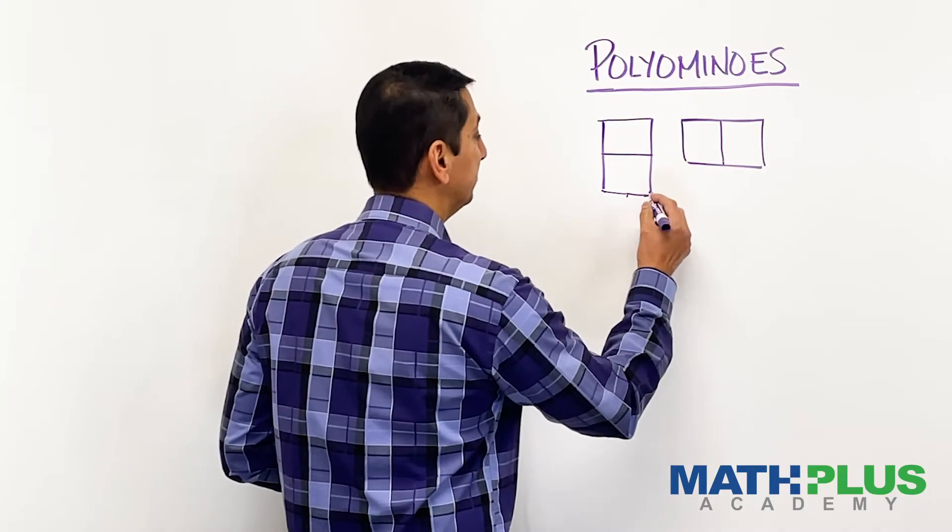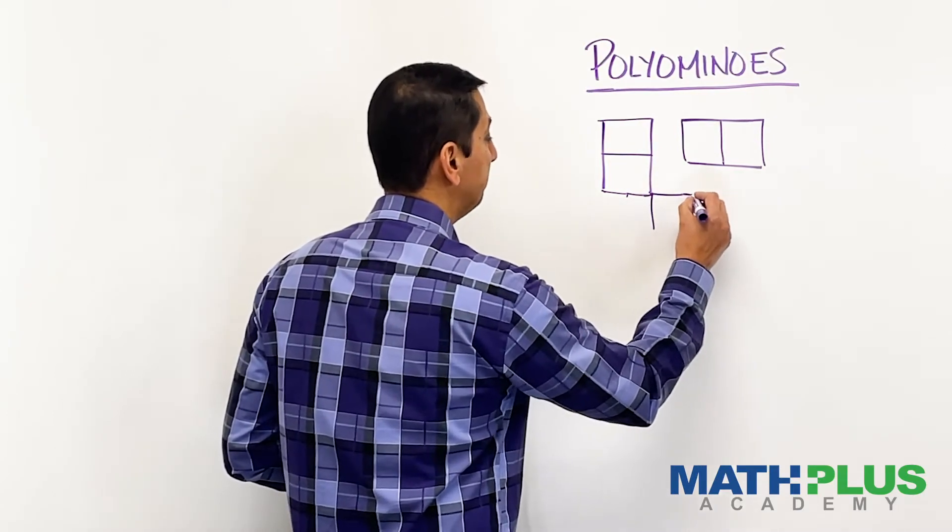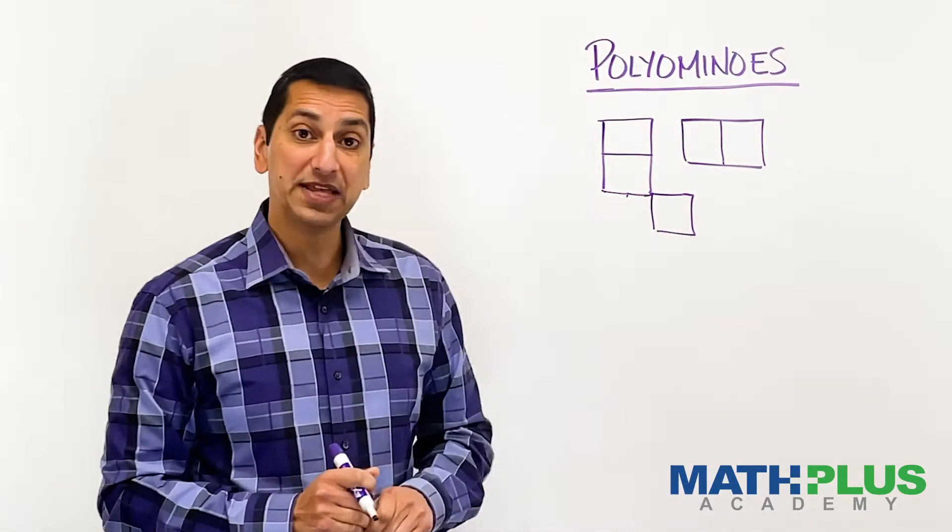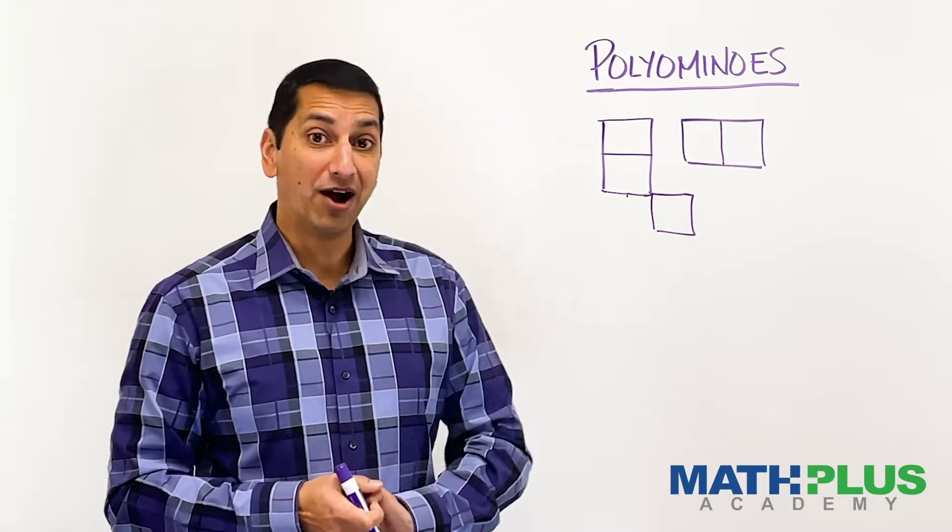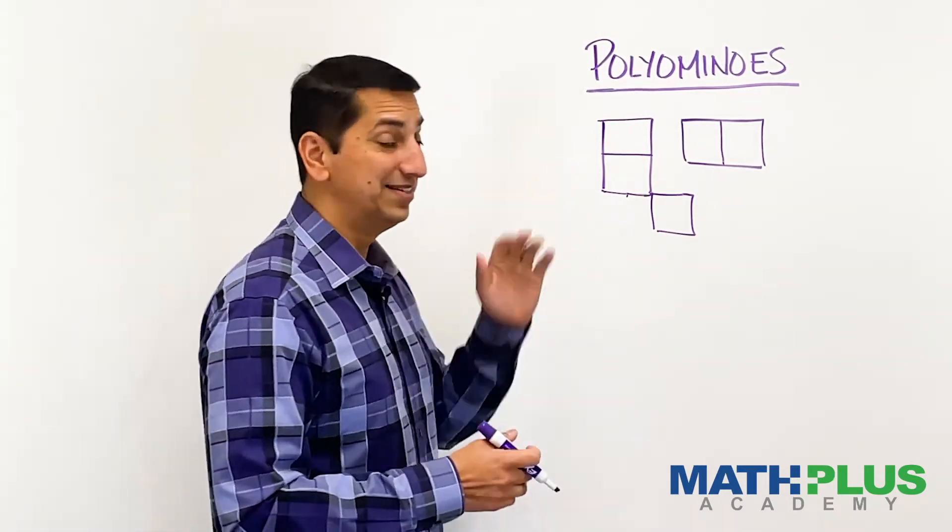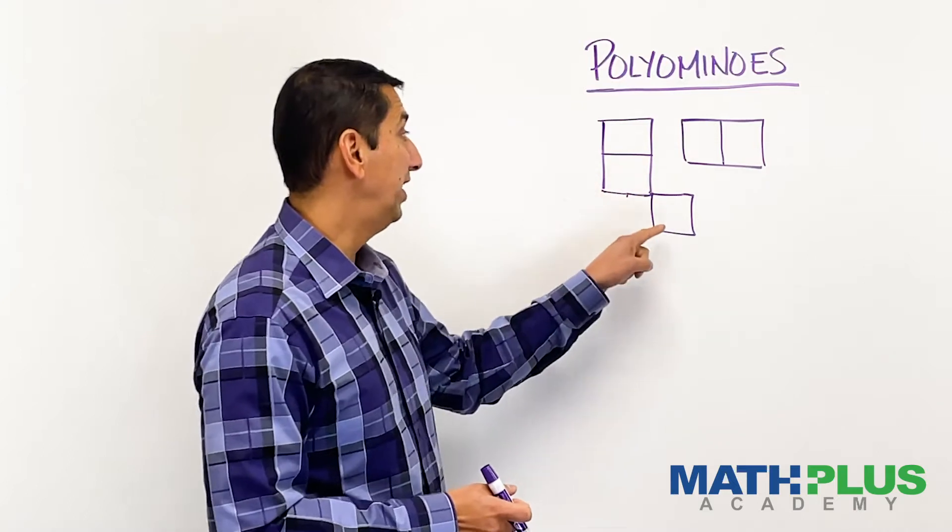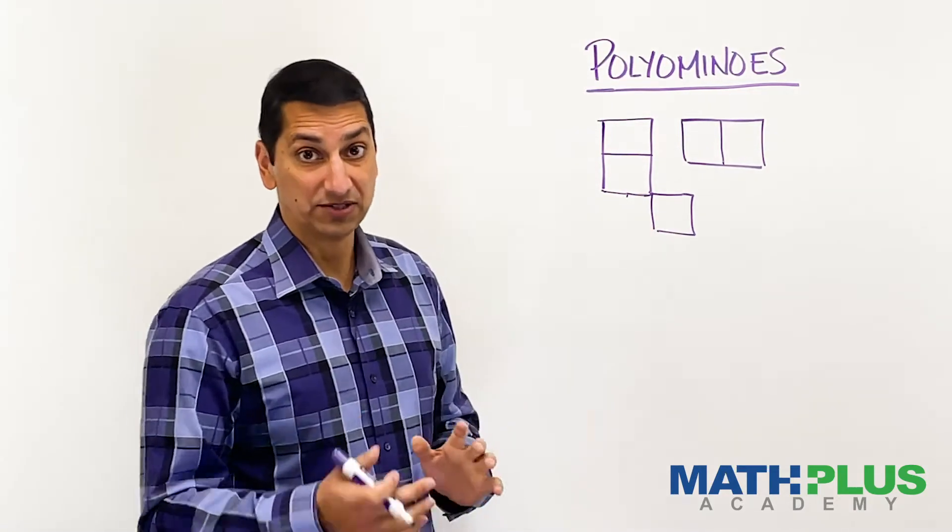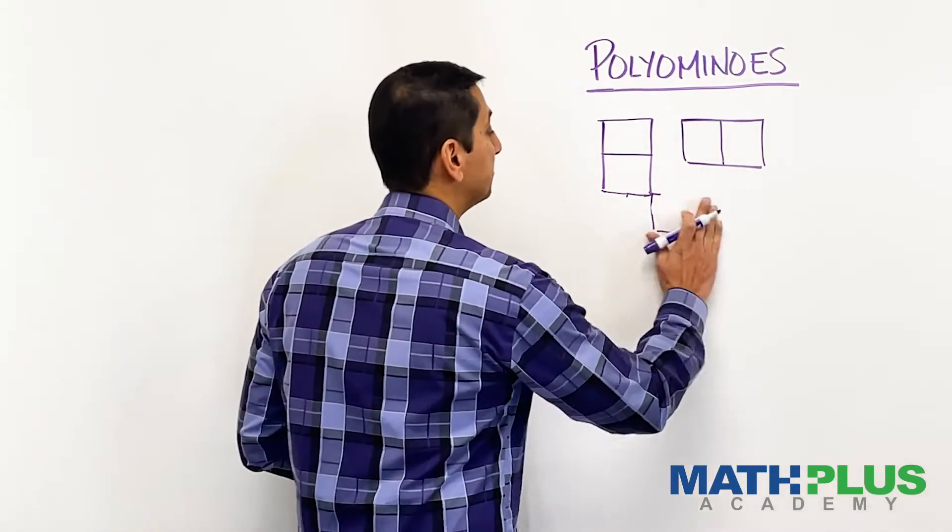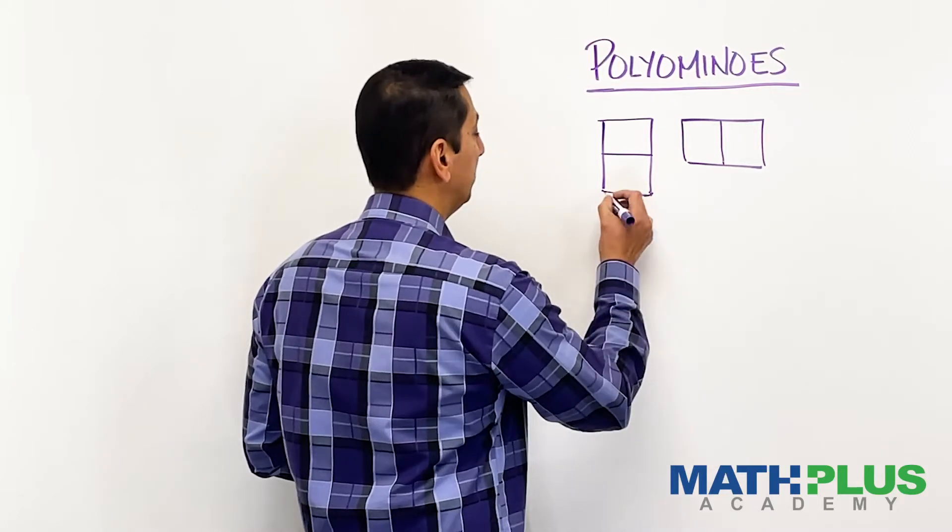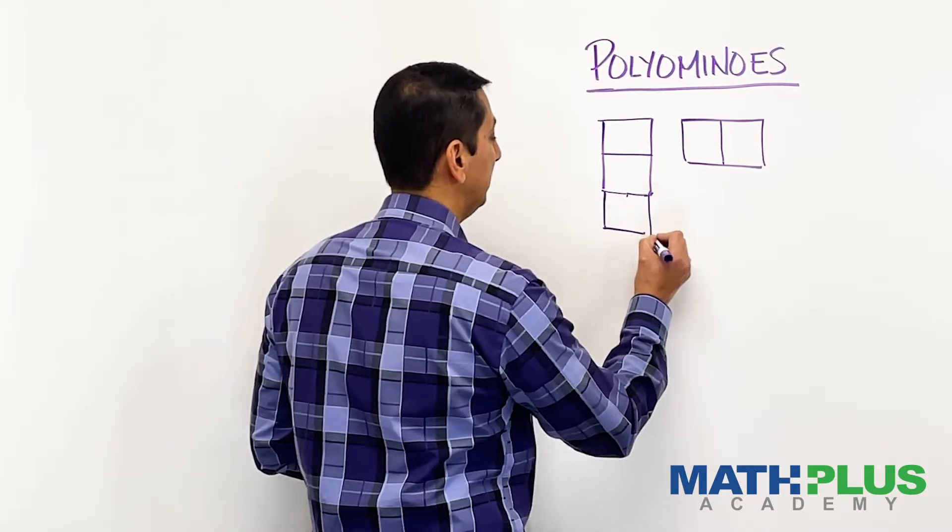Another thing you might think about doing is just have them connect up at a corner like that. Is that a triomino? No. By our rules and definitions, that is not a triomino. It does not share an edge with any of the other squares. So that's out. So I just want to make those rules clear. We'll go back to having this one.